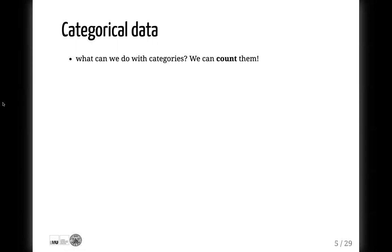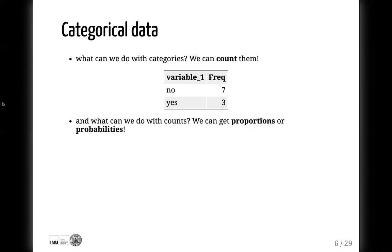And are these counts useful? Well, yes. If we count our huge table, we have seven no's and three yeses — that already gives us some information. But what can we do with these counts? We can get proportions or probabilities from them. It sounds fancy, but probabilities are actually just counts. Imagine an example: we ask 10 farmers whether they like sustainable agriculture or not. Only three said yes and seven said no. So 30% of our farmers support sustainable agriculture and 70% don't.